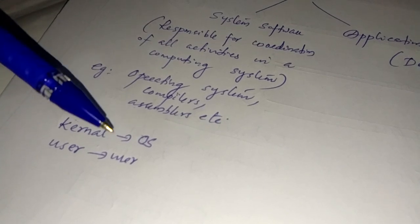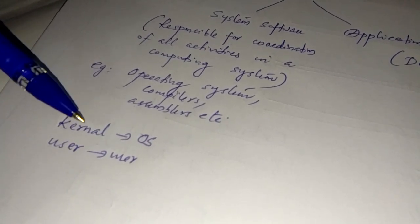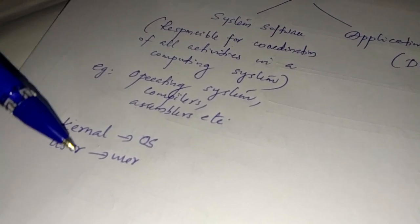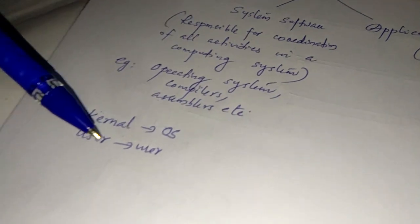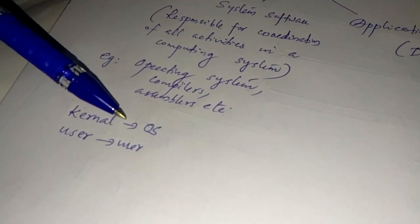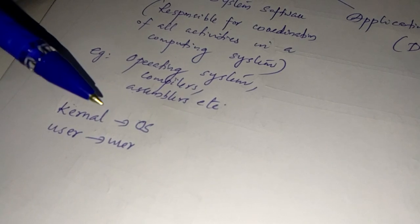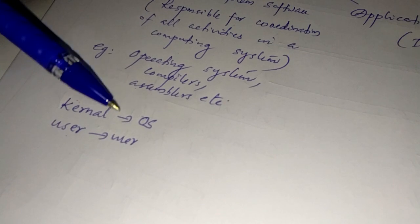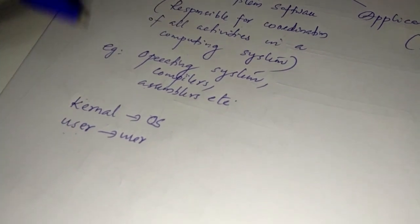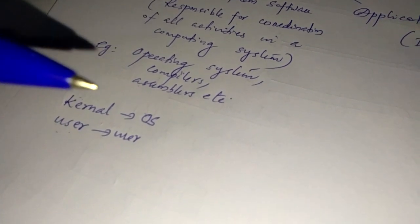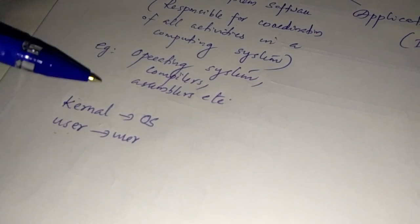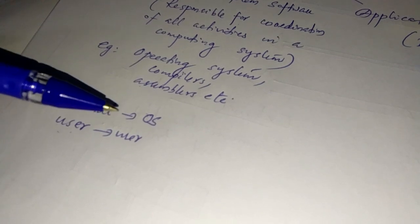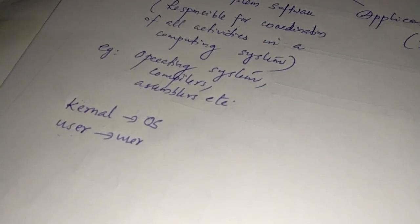The kernel mode is required to execute services for the application program. The operating system in kernel mode handles any service request from the application, performs the corresponding actions, and then gives control back to the user in user mode. So execution control passes back and forth between the application program and the operating system routines.